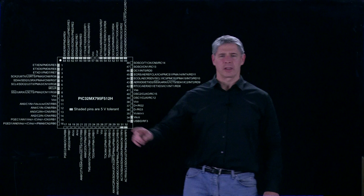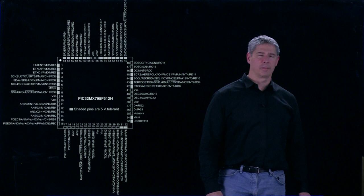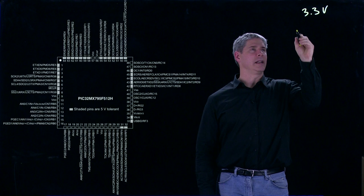There are many different models of PIC32s, but the one we'll be studying is the PIC32MX795F512H. This particular PIC is powered with 3.3 volts and has an 80 MHz CPU.